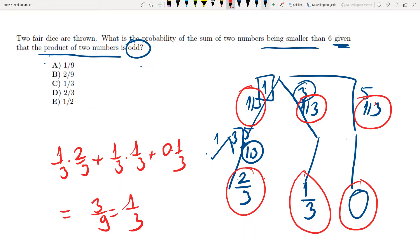So the answer is one over three. Given that both outcomes are odd, given that the product of two outcomes is odd, then the probability of the sum being smaller than six is one over three.